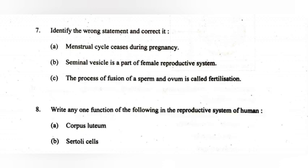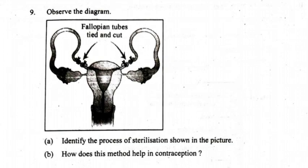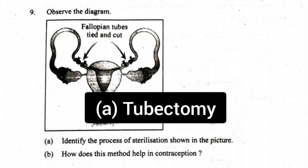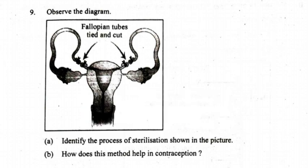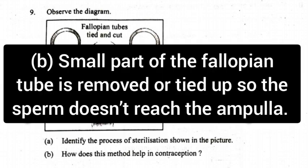9. Observe the diagram. A. Identify the process of sterilization shown in the picture. Answer: Tubectomy. B. How does this method help in contraception? Answer: A small part of the fallopian tube is removed or tied up so that sperm does not reach the ovum.